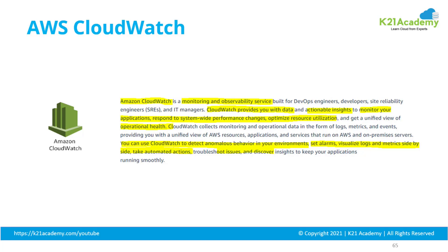CloudWatch is a monitoring and observability service targeted for DevOps engineers, operations teams, site reliability engineers, or managers to make sure your system is behaving as expected. CloudWatch provides actionable insights which help in monitoring your applications and responding to system-wide performance changes — for example, ensuring your website response time stays under a second — and it gives you a single view of the operational health of your system.